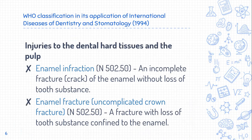The first category is injuries to the dental hard tissue and pulp. This includes enamel infraction — an incomplete fracture or crack of the enamel without loss of tooth substance. The tooth may look normal, but with transillumination you can see the crack. Enamel infraction is coded as S02.50 in the WHO classification, allowing use in medical records.